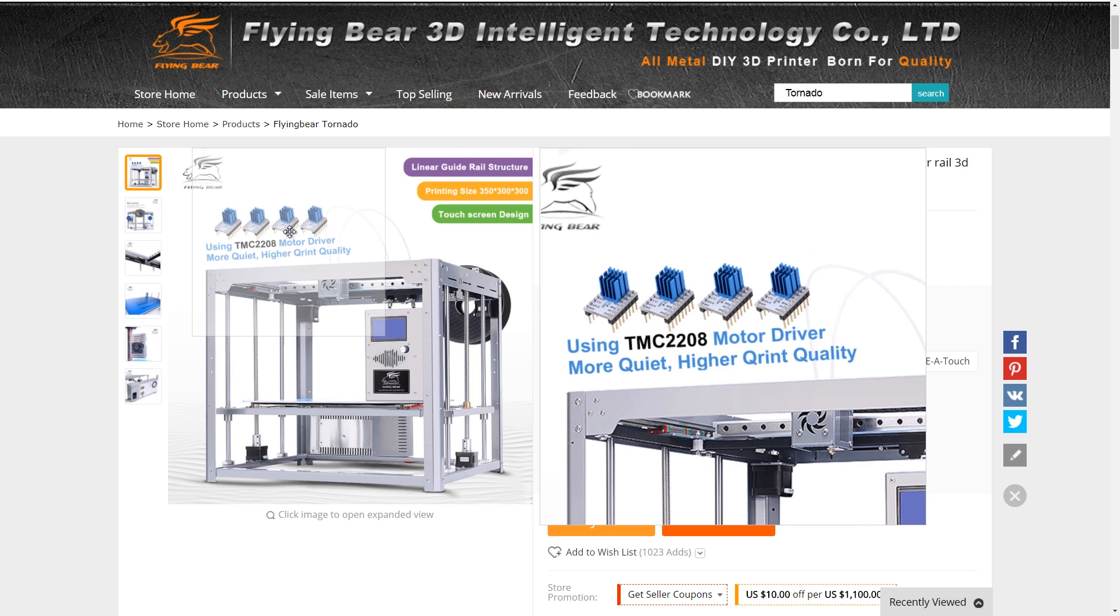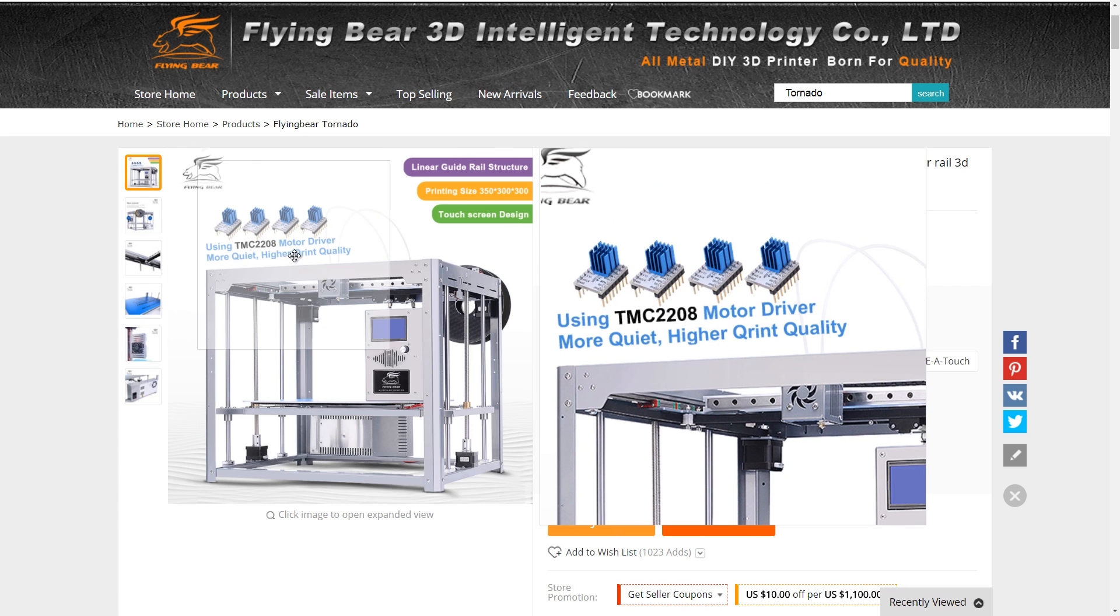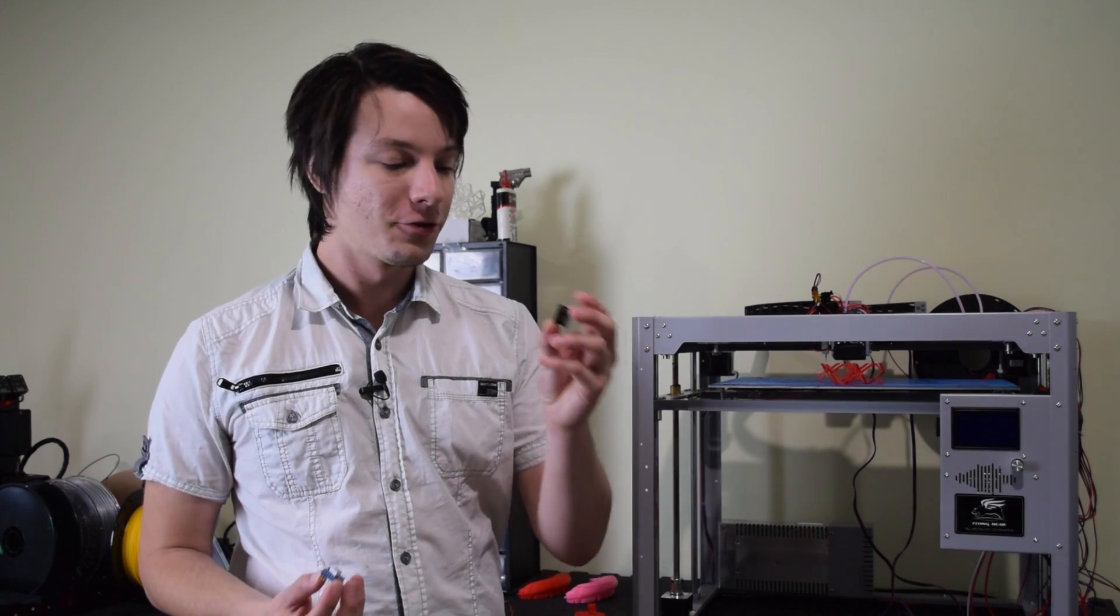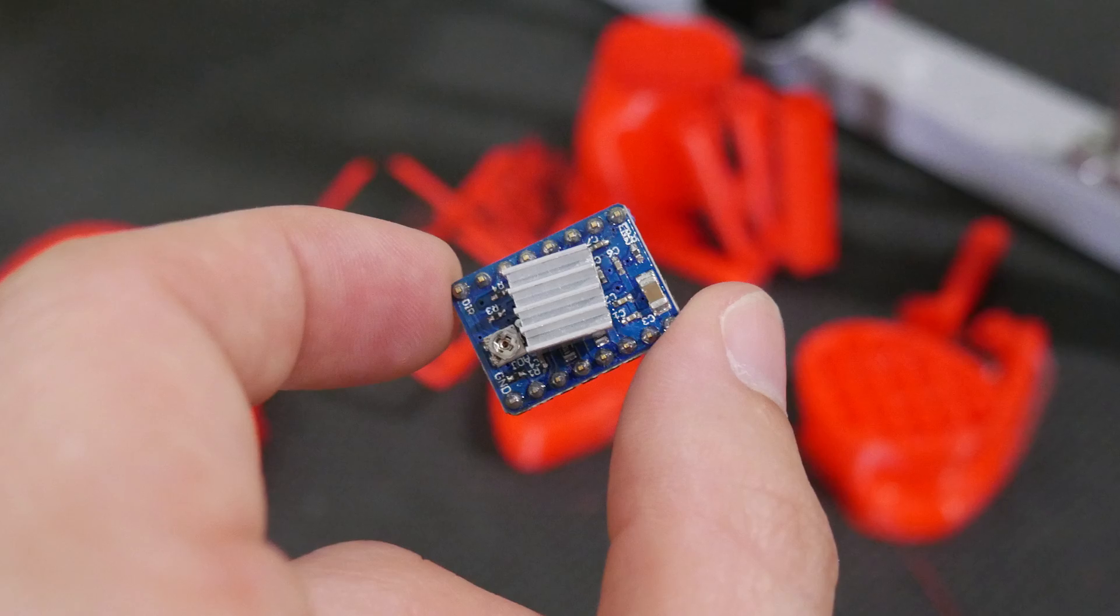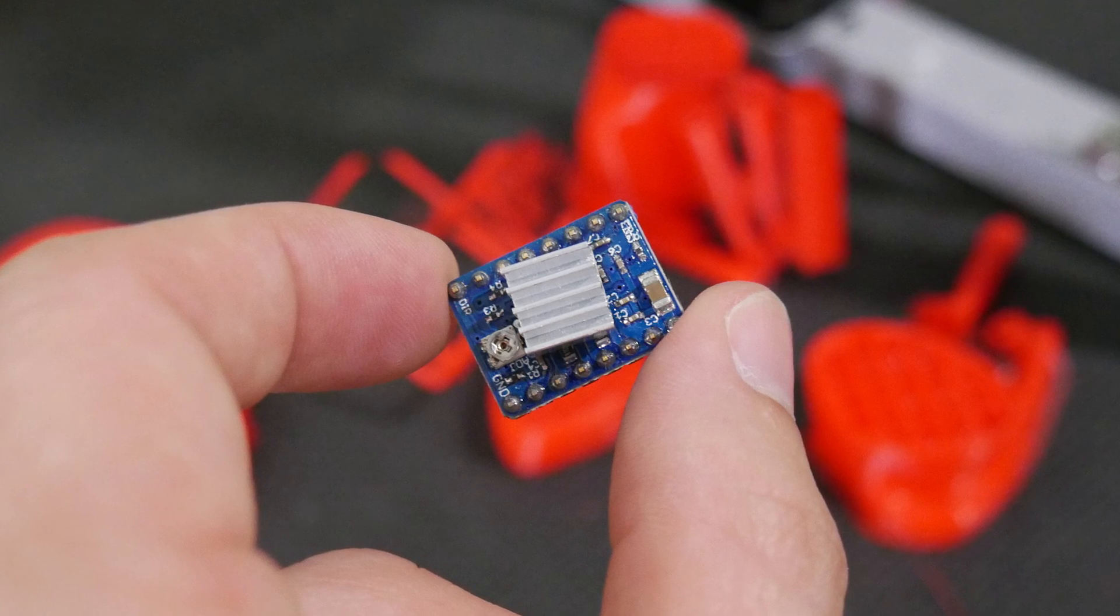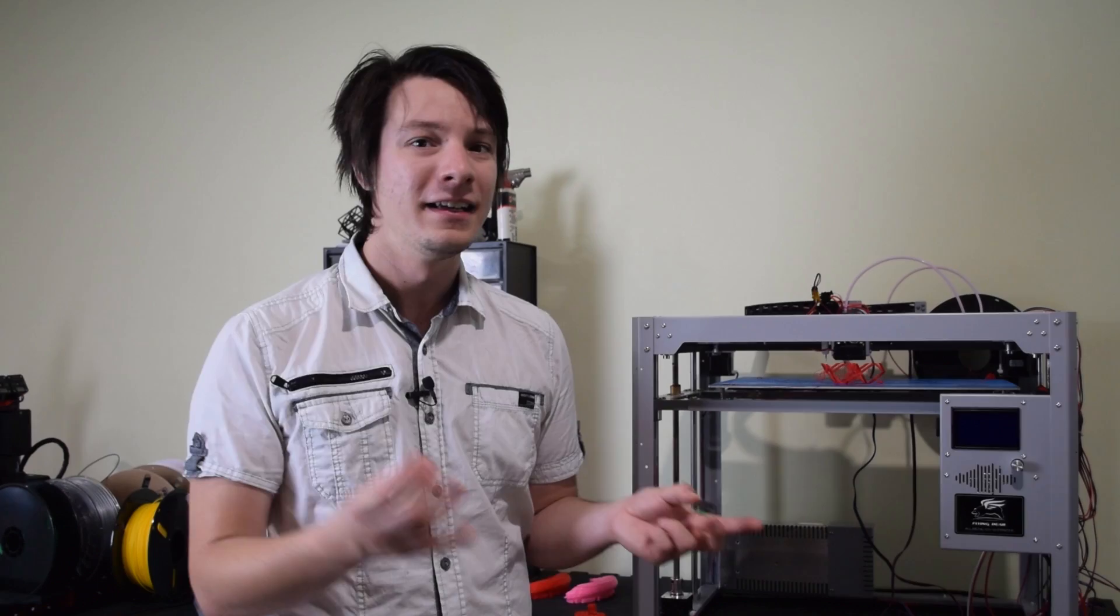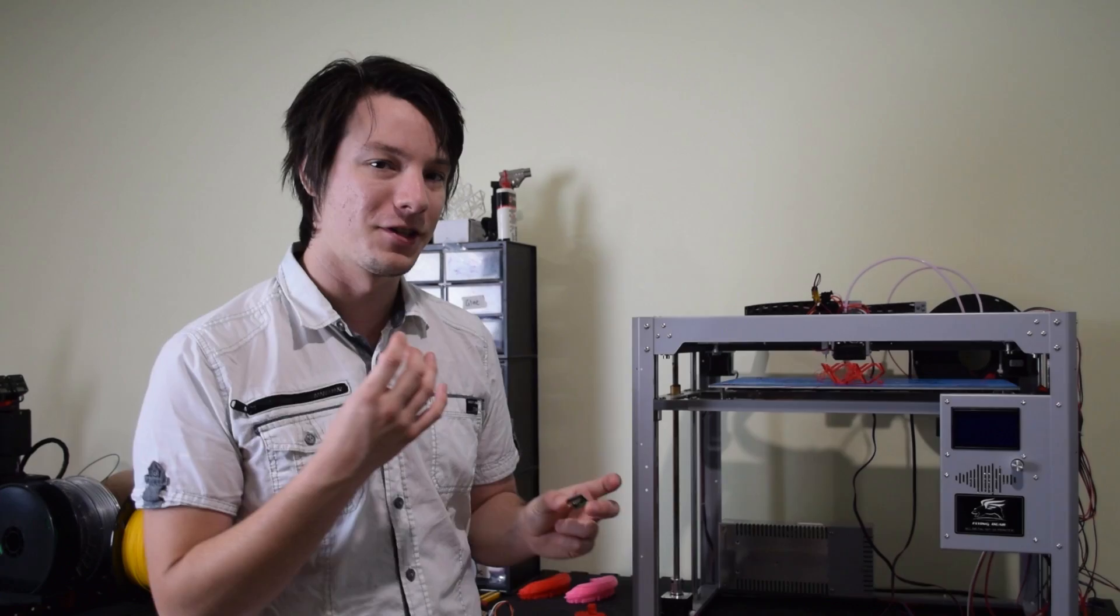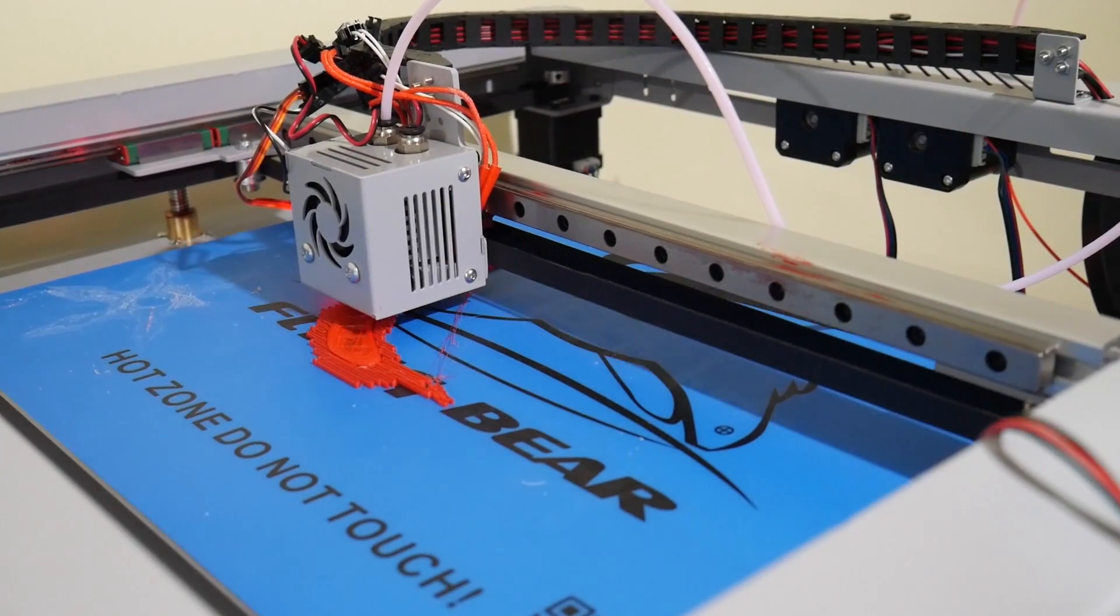Looking on AliExpress, it seems that enough people have complained now they're shipping with the TMC2208s. But I just replaced the original drivers on my machine with some crappy A4988s, which just came from another kit I had. And it made this machine quiet enough to be usable. I did have to halve the steps per millimeter in firmware to account for the different level of microstepping though. But it wasn't too difficult. But just... Why?